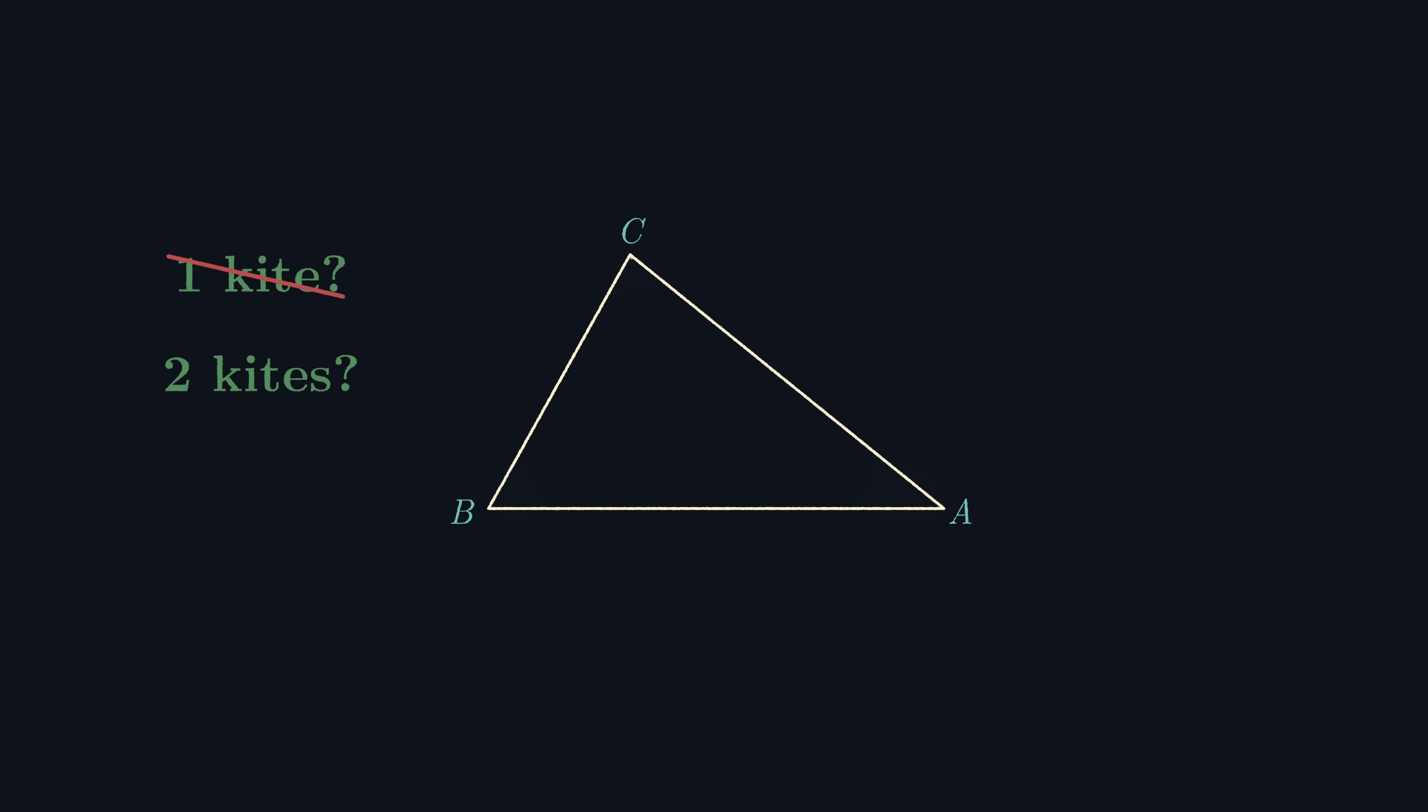Hence, we must use two cuts, but one of the resulting shapes will be convex, and the other concave. However, by definition, a kite is convex, so this is impossible.